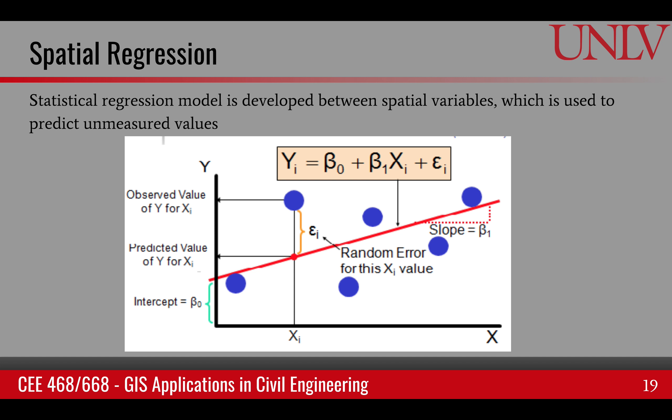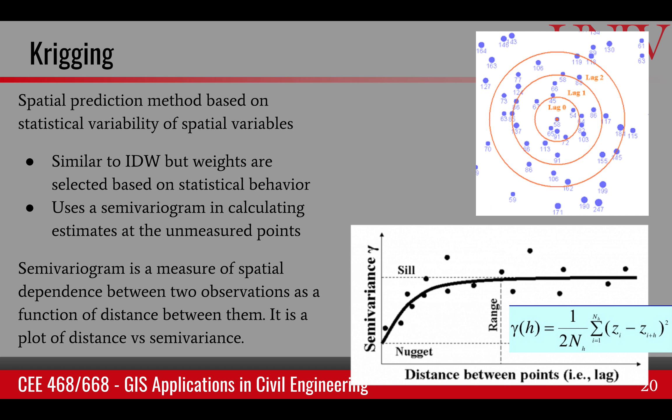The other one is called Kriging. This is a little bit more complicated because this takes into account the spatial variability of the variables. This is also a statistical technique that takes into account how things are varying in space. It's similar to inverse distance weighting when it comes to computing. But instead of the inverse distance, the weights are coming from the variance of the variable.